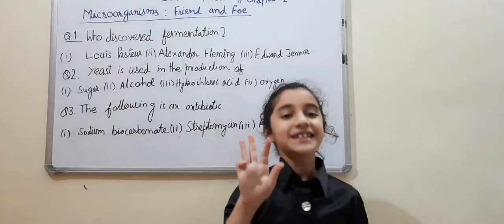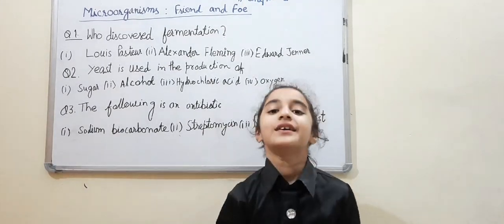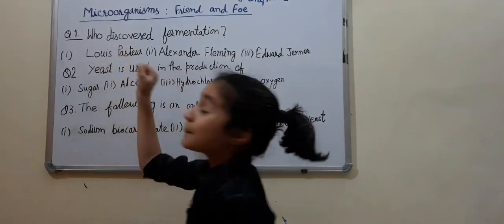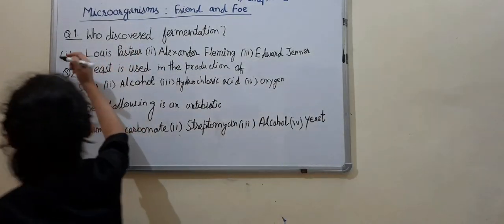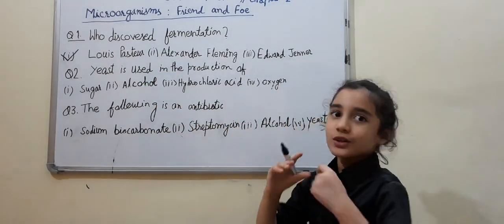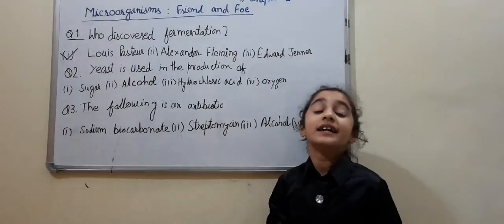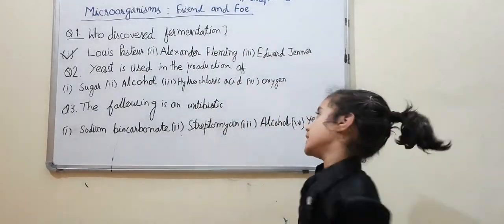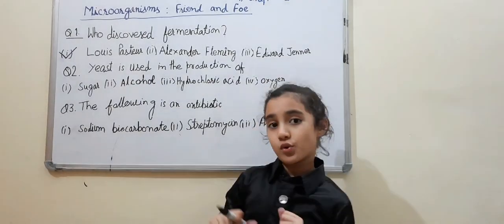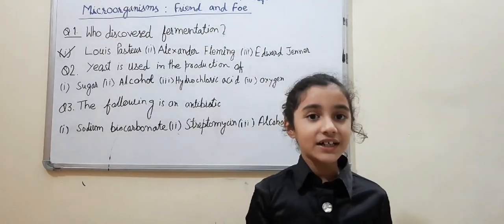I will give you 3 seconds, your time starts now. The correct answer is Louis Pasteur. You also have to remember that Alexander Fleming discovered penicillin, and Edward Jenner discovered the smallpox vaccine.